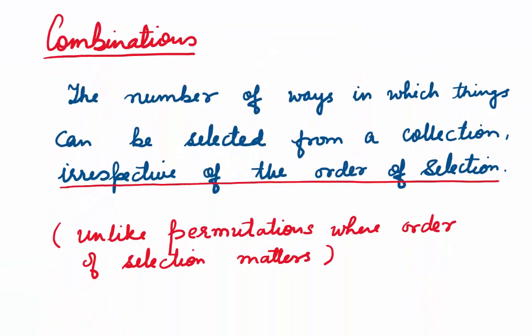What are combinations? Combinations are the number of ways in which things can be selected from a collection of objects, irrespective of the order of selection. It could also be selection of people from a group of people.